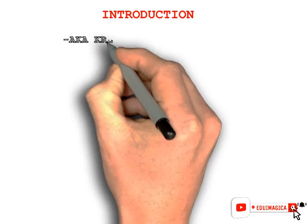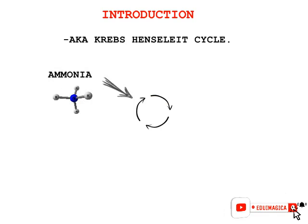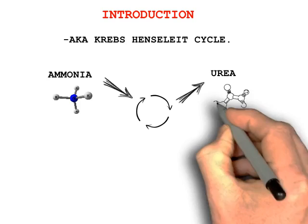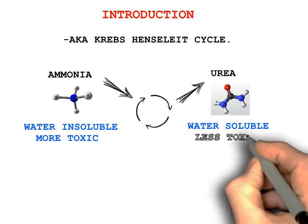The urea cycle, or the ornithine cycle, is also known as the Krebs-Henseleit cycle. In simple words, the urea cycle is a biochemical pathway that converts the ammonia present in our body to urea. This is done mainly because ammonia cannot be dissolved in water easily and it is a toxic compound, whereas urea can be easily dissolved in water and is far less toxic than ammonia. This basically means that we can excrete urea with our urine, but not ammonia.